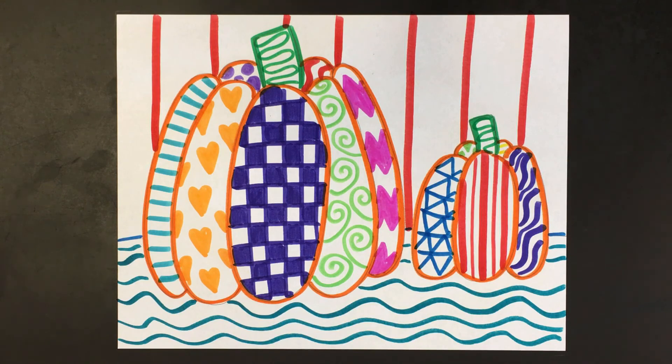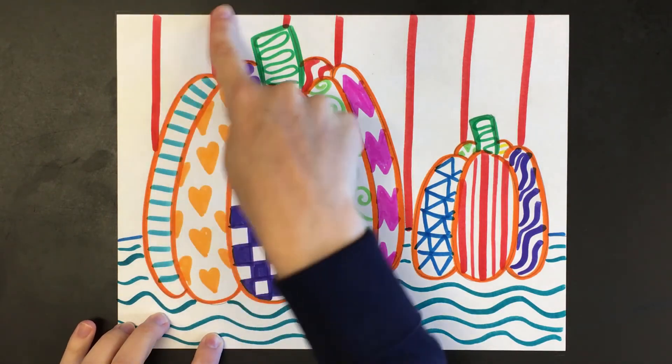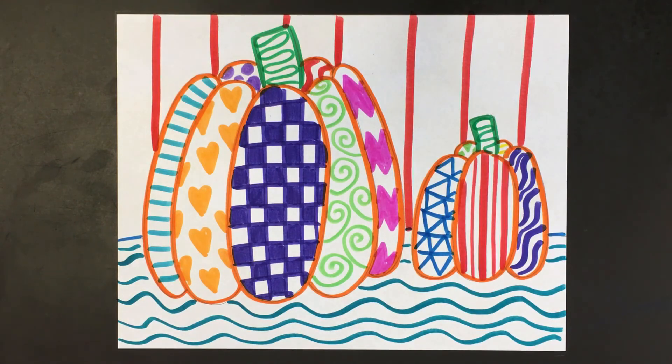I finished adding all of my patterns and I even decided to add a pattern to my table. I added a polka dot pattern in the background and I added some patterns on my stems. The only thing I have left to do, and this is an optional last step, is I can go back in with crayon and I can color my project. So I'm going to get started on coloring my project and I will show you what it looks like when it's all finished.